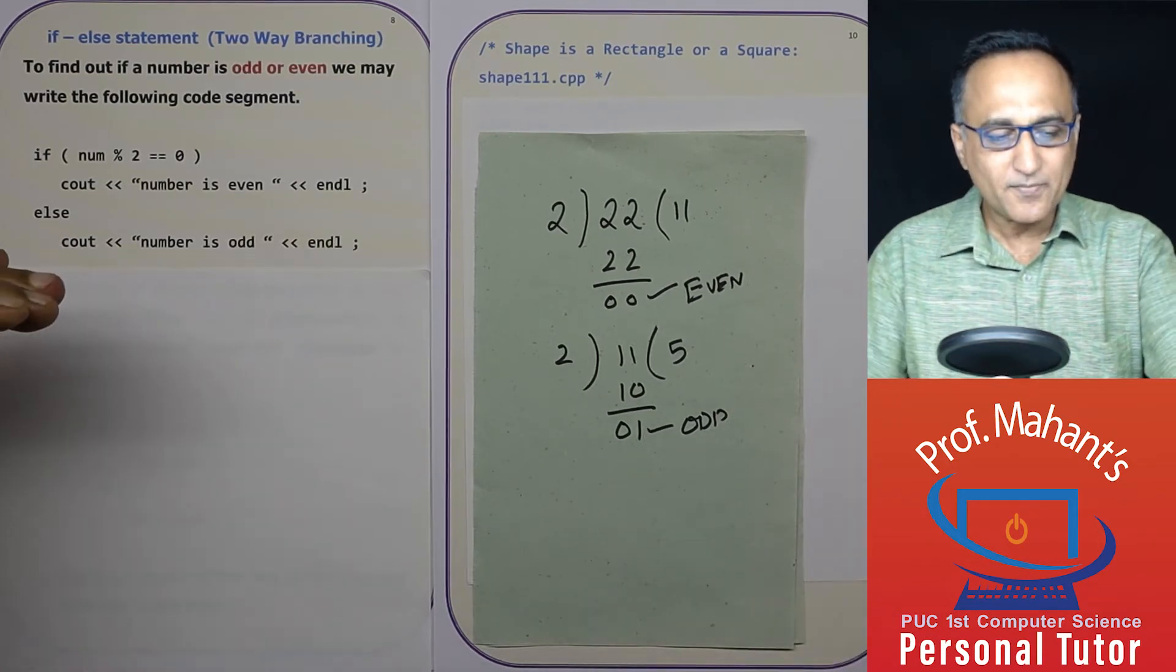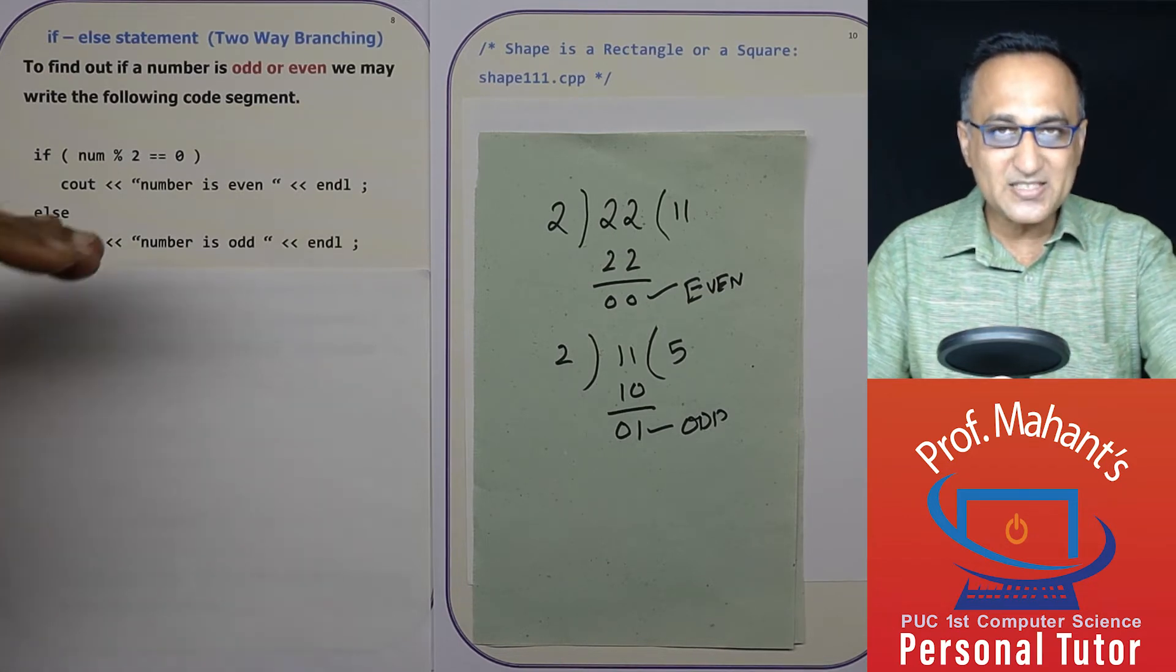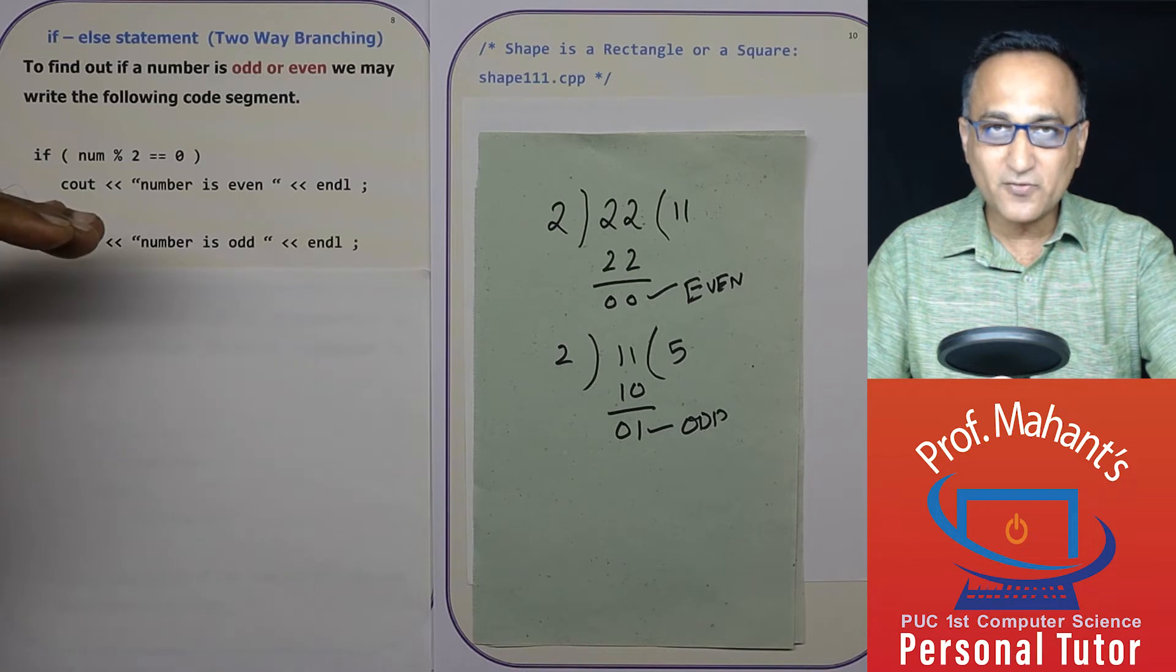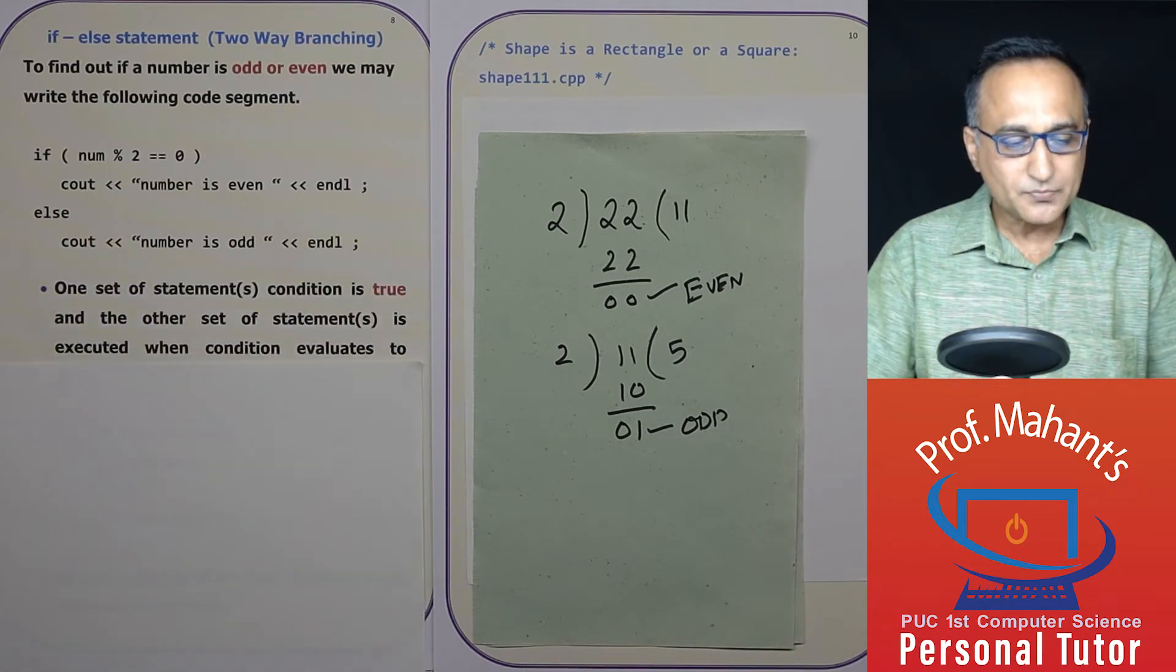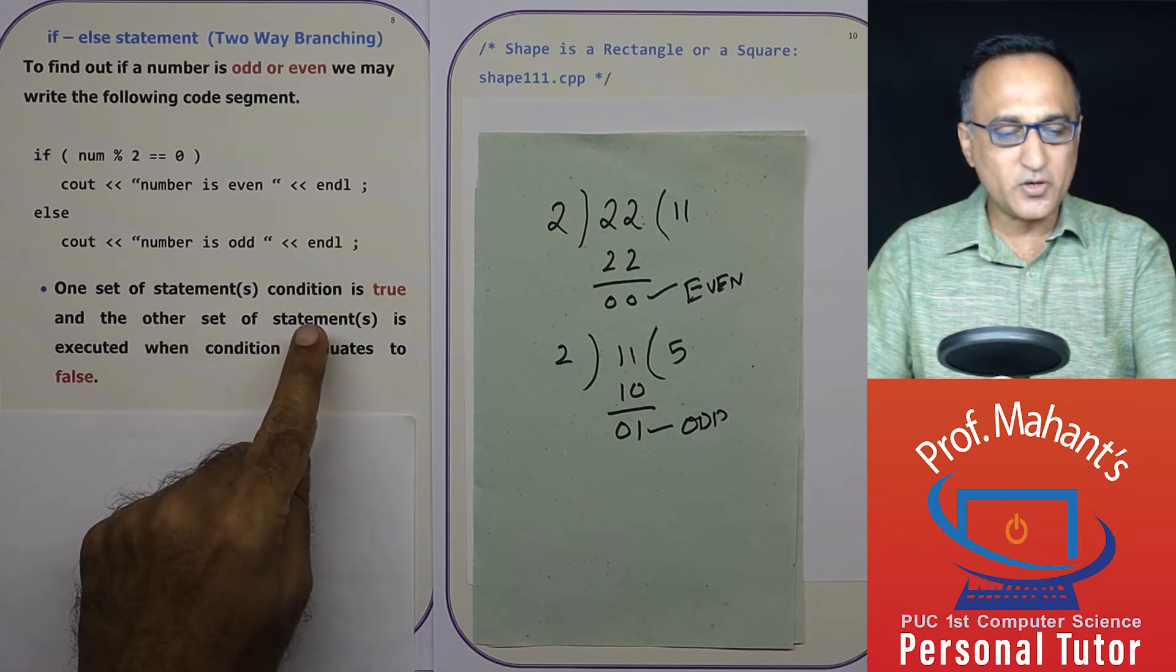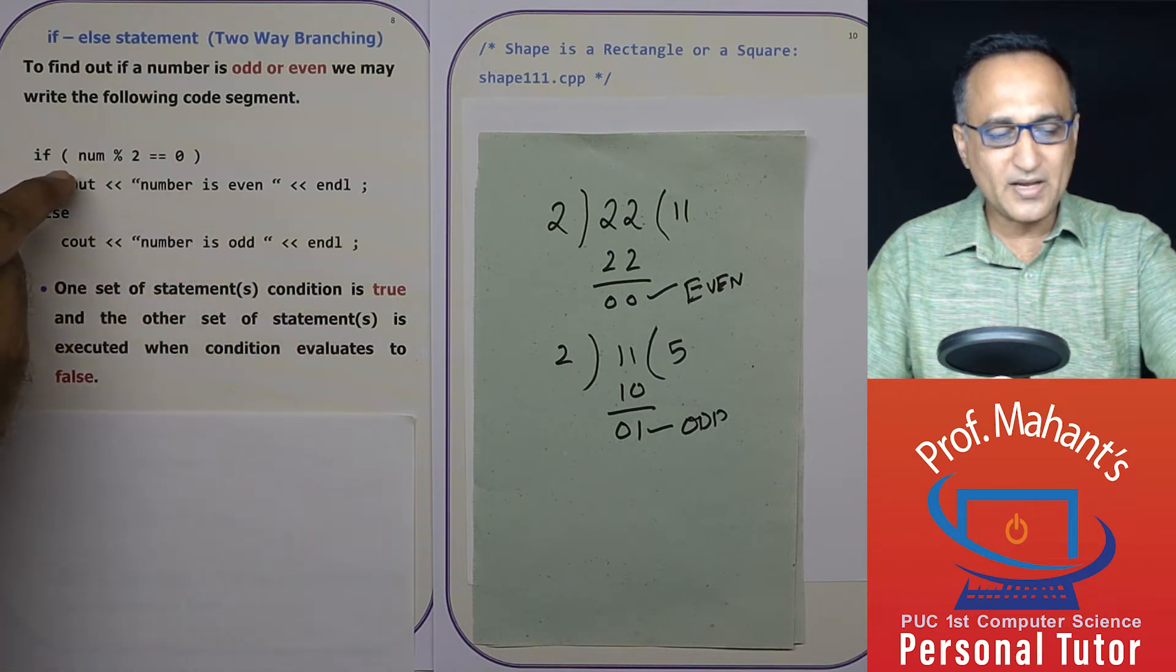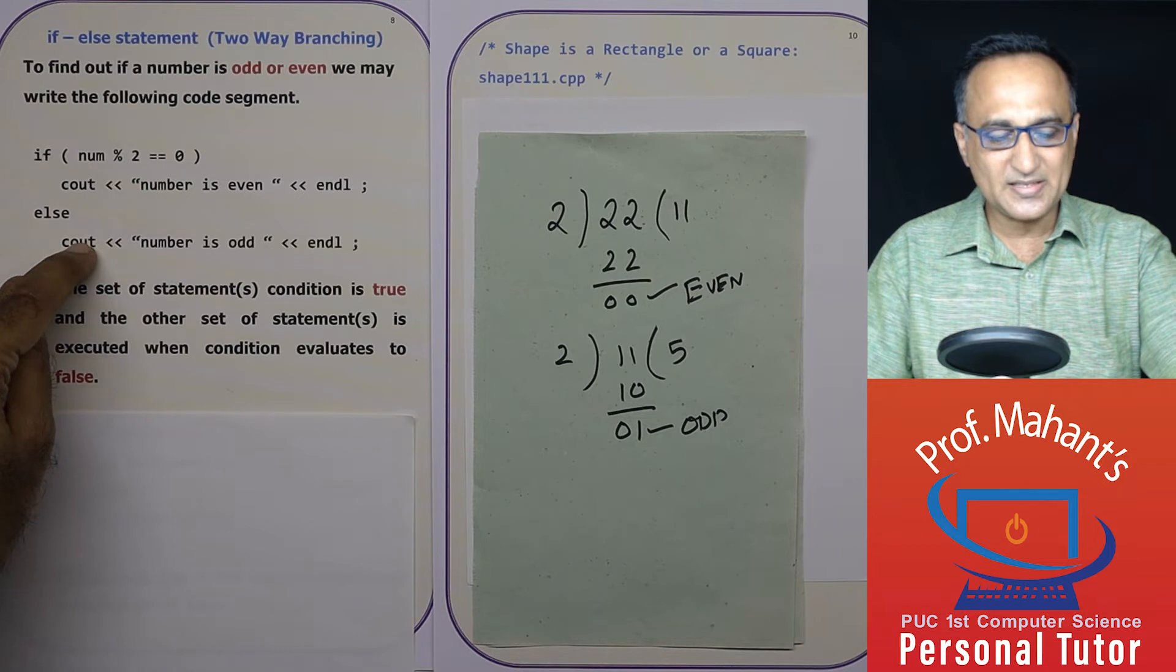So if the condition is true, the else part will never be executed. If the if is false, then only the else is going to be executed. So the moral of the story is only one set of statements is going to be executed, not both. You will never have this and this executed at the same time. Either it will be this or it will be this.